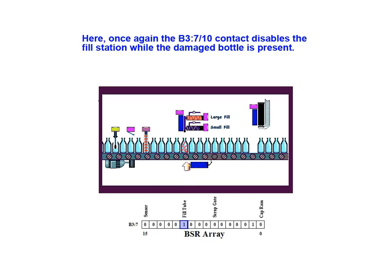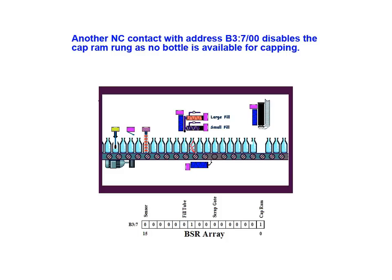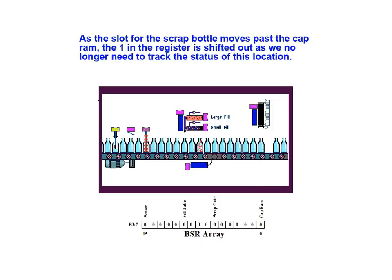The B37-bit 10 contact disables the fill station while the damaged bottle is present. Another normally closed contact with address B37-bit 06 disables the cap ram rung as no bottle is available for capping. This was the empty slot left behind as the first damaged bottle was dumped down the scrap gate. As the slot for the scrap bottle moves past the cap ram, the 1 in the register is shifted out as we no longer need to track the status of this location.